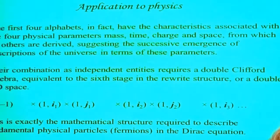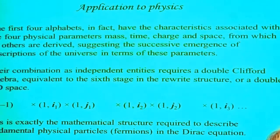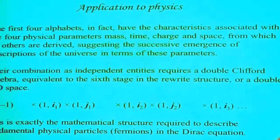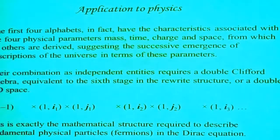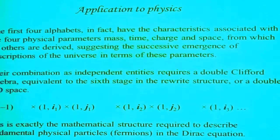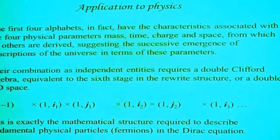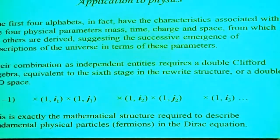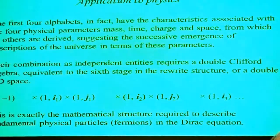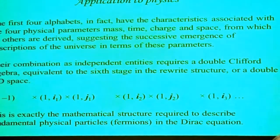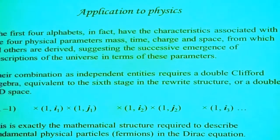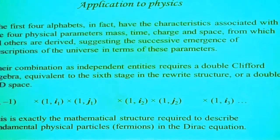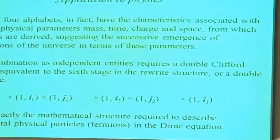Physics requires one unit cell of this. We will also show that it's equivalent to a double three-dimensional space. When we write the Dirac equation — the fundamental quantum mechanical equation which applies to all fundamental physical particles — we find that this is precisely the algebra that it uses. So we have two reasons for being interested in this physically: mass, time, charge, and space — the four fundamental parameters. Combine all their algebras together and we get the algebra of the Dirac equation.